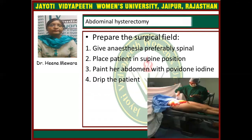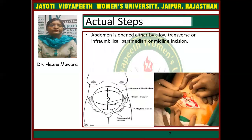Now, abdominal hysterectomy procedure. First, give anesthesia, preferably spinal anesthesia. The patient is placed in supine position. Paint the abdomen with povidone-iodine and drape the patient. The abdomen is opened either by low transverse, infraumbilical paramedian, or midline incision. This is the infraumbilical or Pfannenstiel incision or low transverse incision. This is the midline incision. This picture shows how to give incision to the skin.